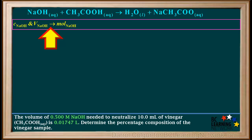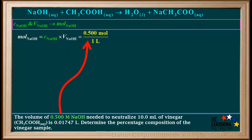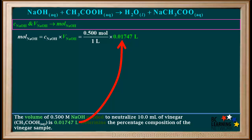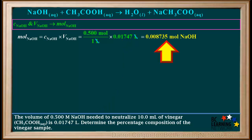The reactant we can find the moles of is NaOH. We use the concentration and volume of NaOH to calculate the moles using the formula: moles of NaOH equals concentration of NaOH times volume of NaOH. The concentration of NaOH is 0.500 molar, or 0.500 moles per liter, and the average volume of NaOH solution in the three trials was 0.01747 liters. Multiplying concentration and volume and cancelling out liters gives us 0.008735 moles of NaOH.